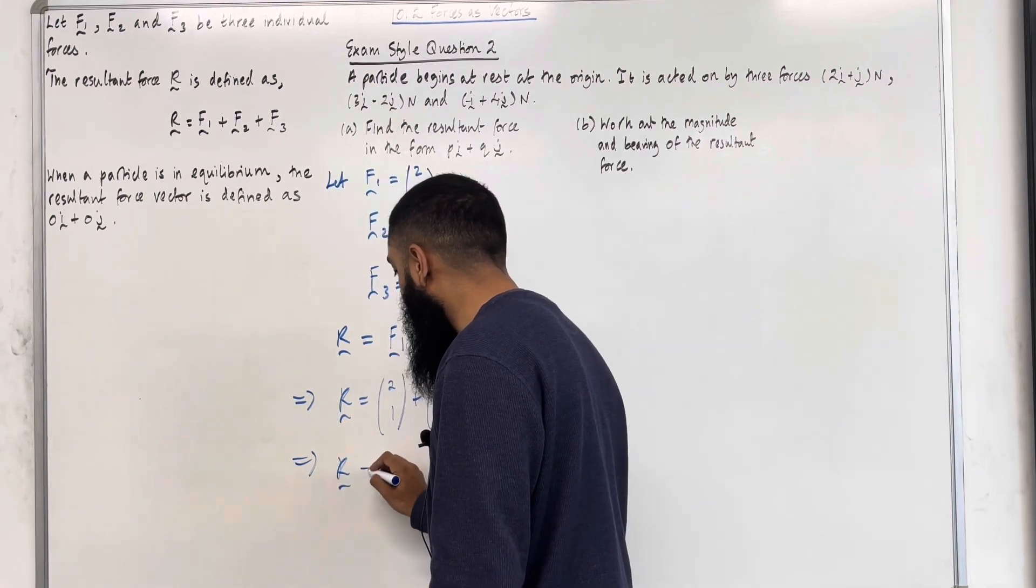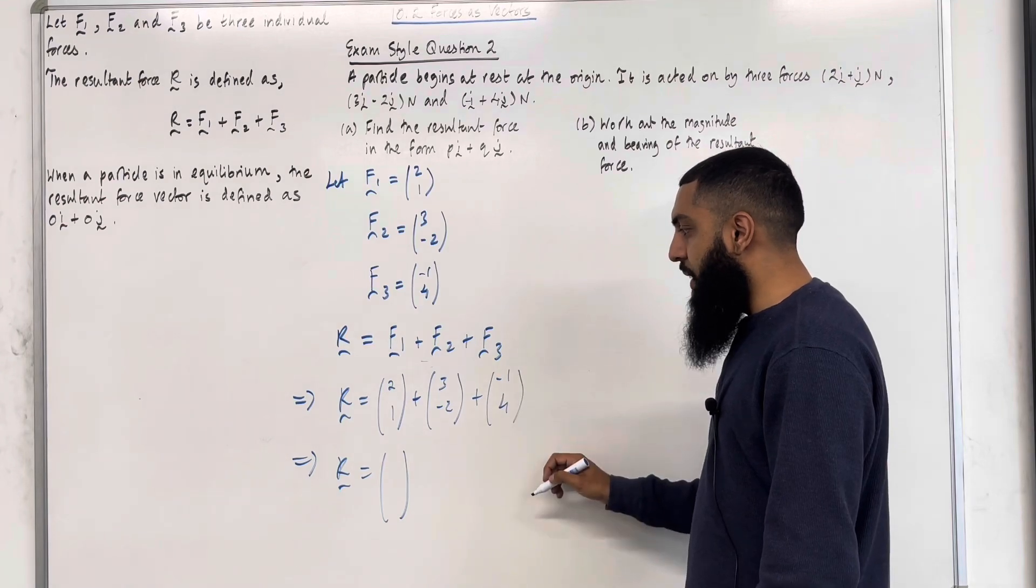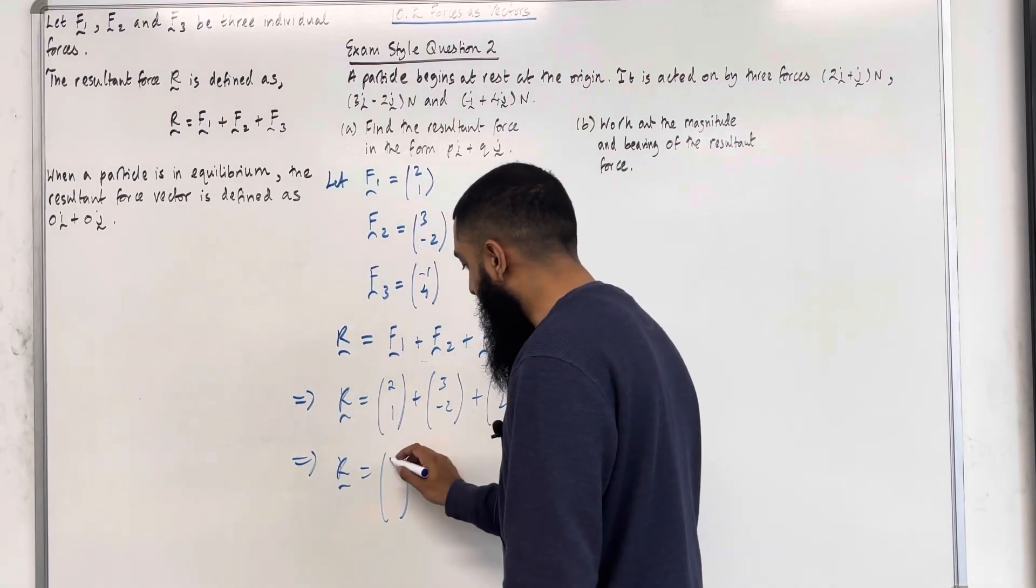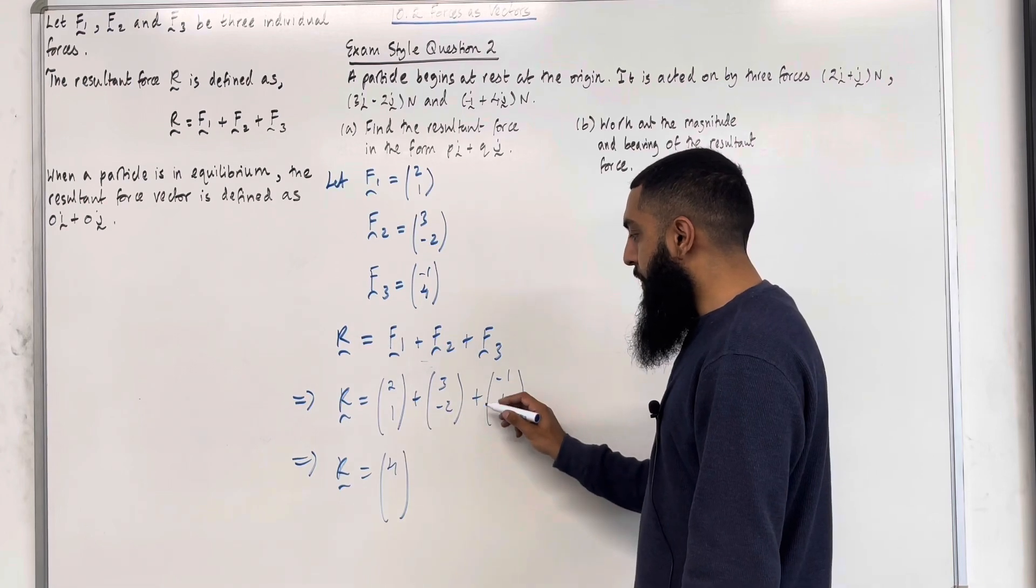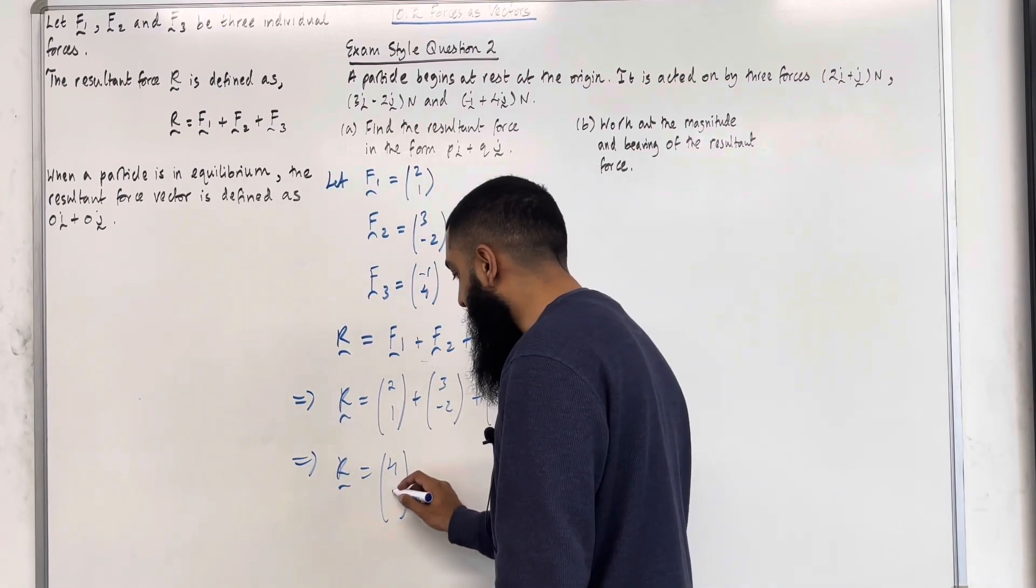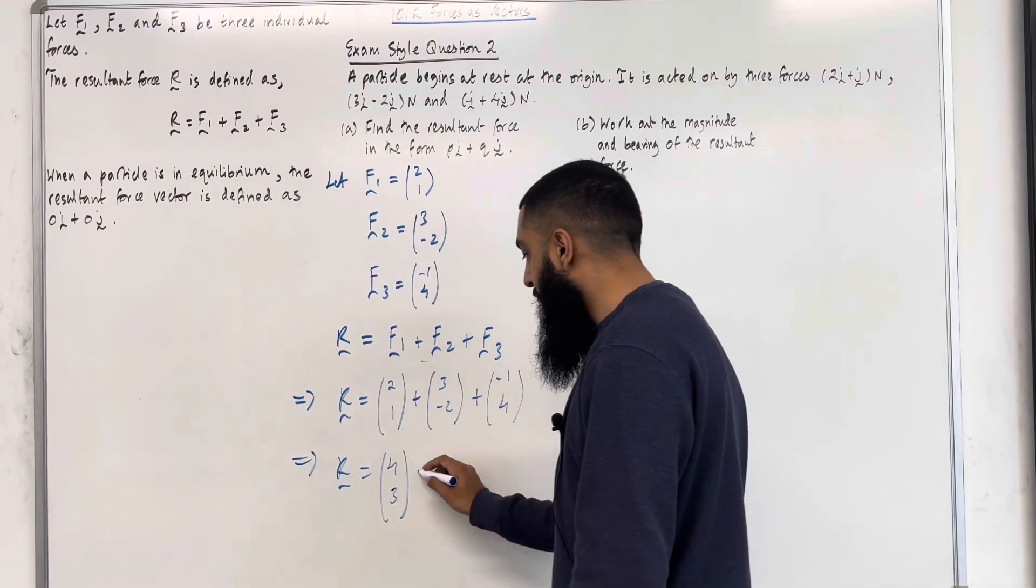So, we have that R is equal to 2 plus 3 is 5 plus minus 1, which is 4. That is the I component. 1 plus minus 2 is minus 1 plus 4 is 3. That is the J component. So, R is equal to 4 and 3 Newtons.